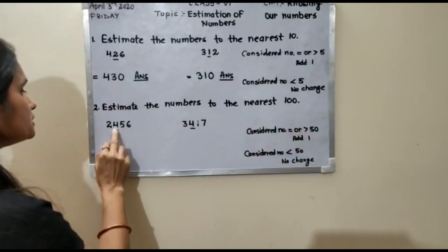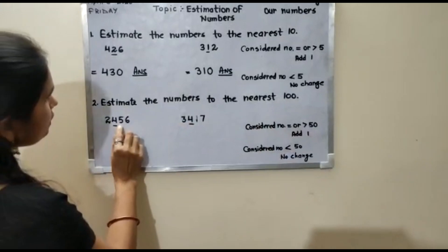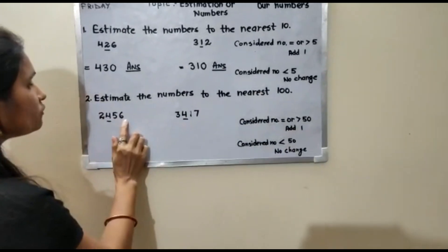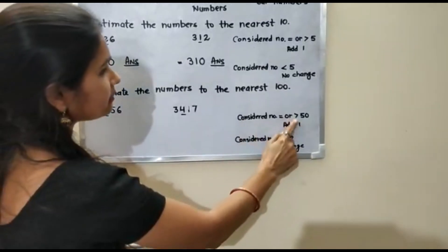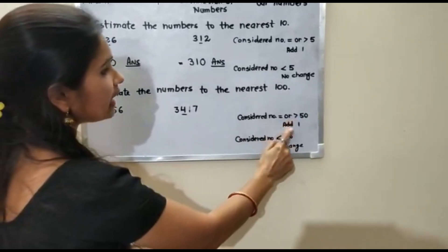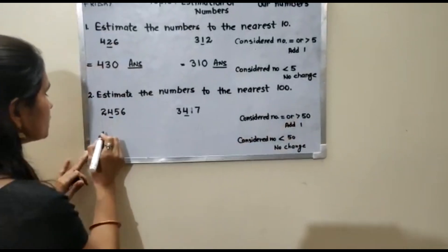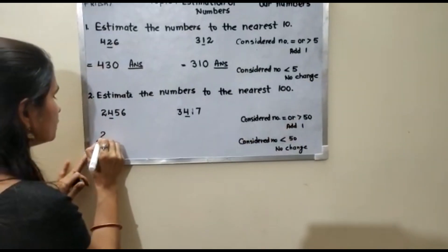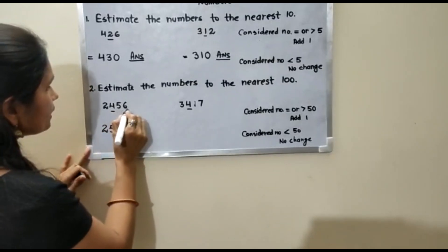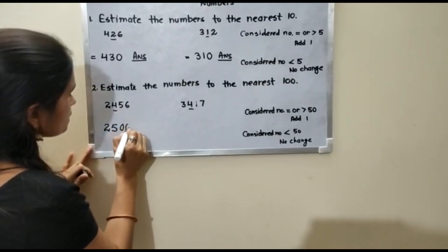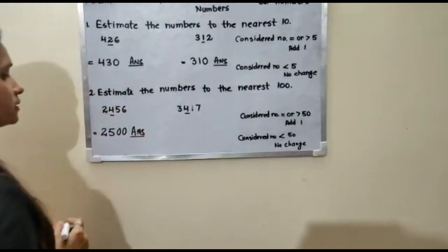For the first question, 2456 to the nearest hundred — underline the hundreds place, which is 4. Your considered number is 56. Since 56 is greater than 50, you will add 1 to the underlined digit. The first number remains the same, 4 plus 1 is 5, and the last digits become 0. So 2500 is the correct answer.